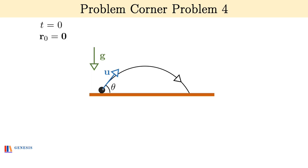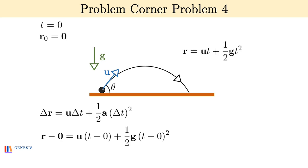Here Δr vector is the displacement and Δt is the time interval, so Δr is nothing but final position minus initial position, so r vector minus 0, where r vector is the position of the stone at an instant t. And Δt becomes t minus 0, so this equation boils down to r = ut + ½gt².